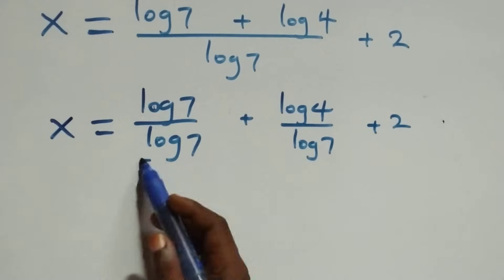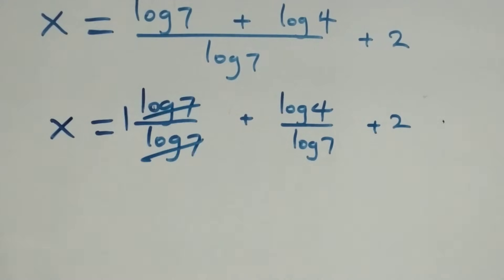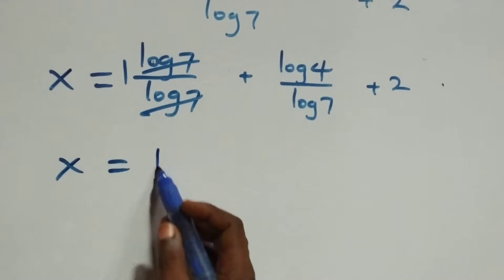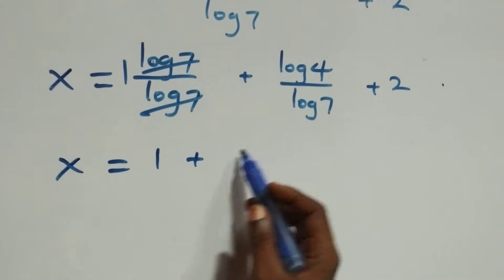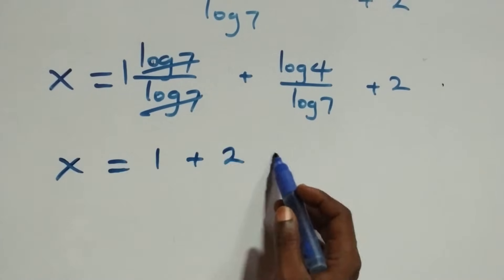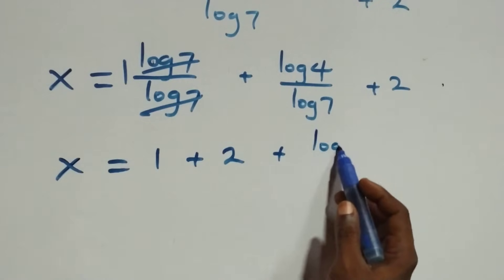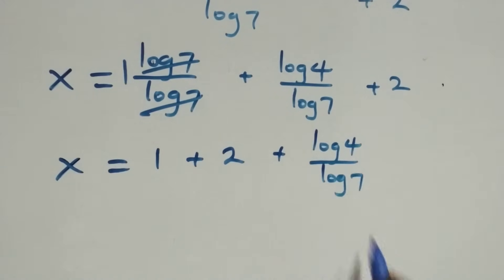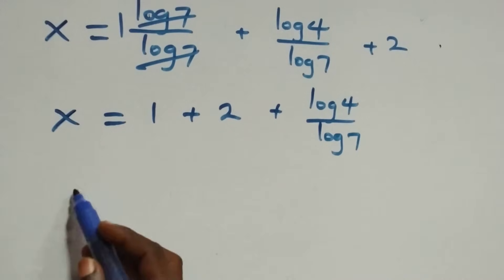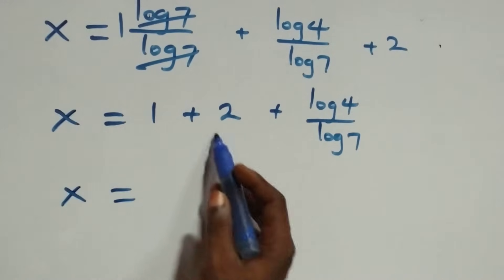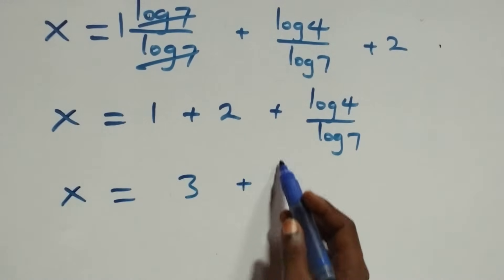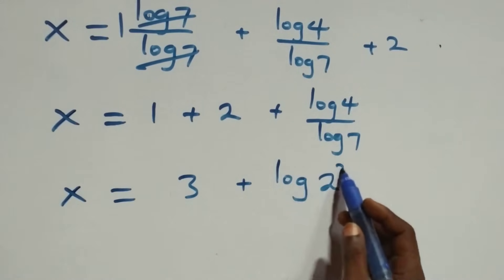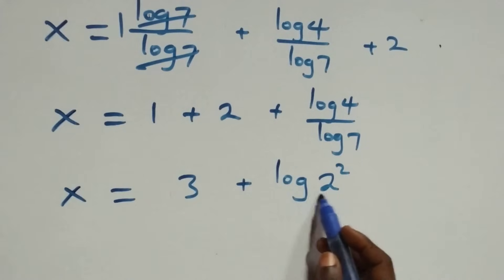Here, log 7 over log 7 cancels to give 1. Which implies x equals 1 plus 2 plus log 4 over log 7. That is x equals 3 plus log 4 over log 7. We can express 4 as 2 squared, so x equals 3 plus log of 2 squared over log 7.